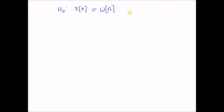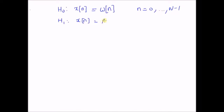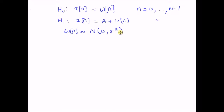Given the following model: under null hypothesis H0, we have x(n) = w(n), that is x(n) is basically noise, for values of n equal to 0 to N−1. Under alternate hypothesis H1, we have x(n) = A + w(n), a DC level A plus noise w(n). We assume that the noise w(n) follows a Gaussian distribution with mean 0 and variance σ².